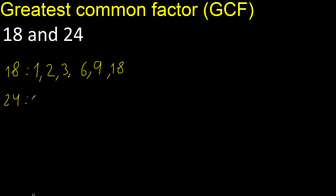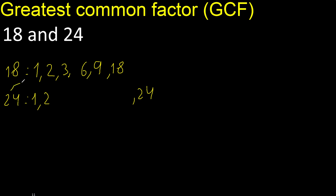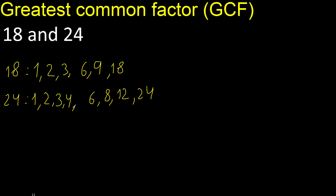Factors. Always start with one. Twenty-four divided by one is twenty-four. Next, two. Twenty-four divided by two is twelve. Divided by three is eight. Twenty-four divided by four is six. Next, five. Twenty-four cannot be divided by five. Next, six. Six is here.